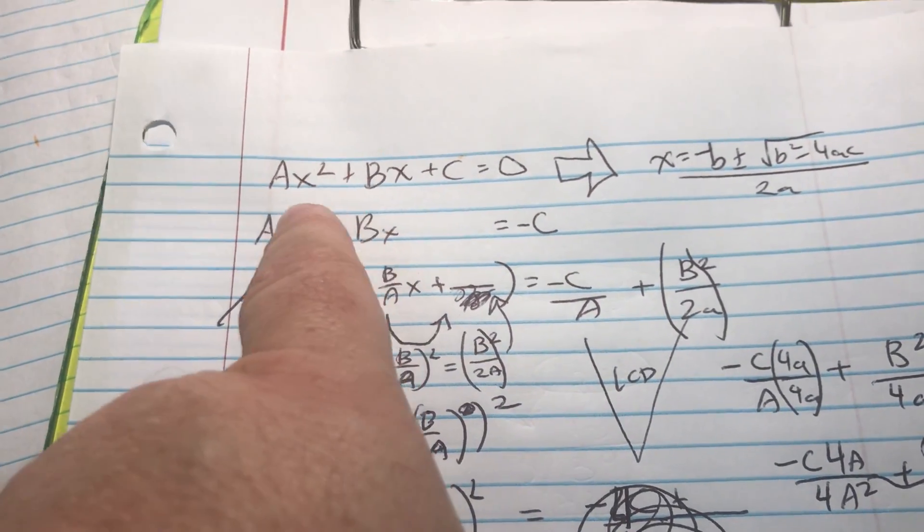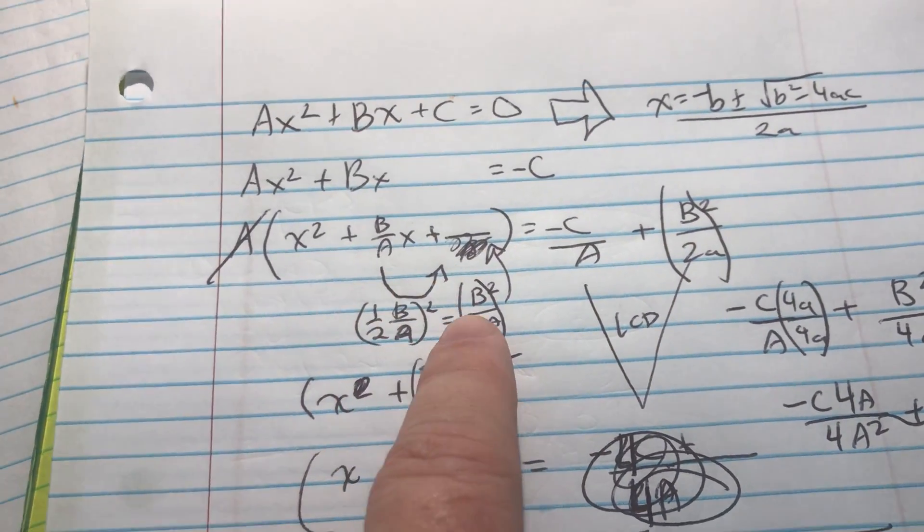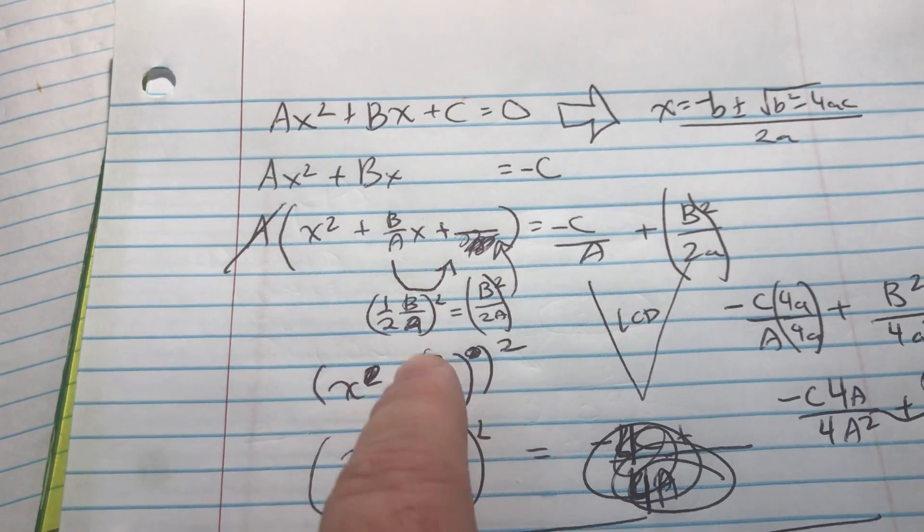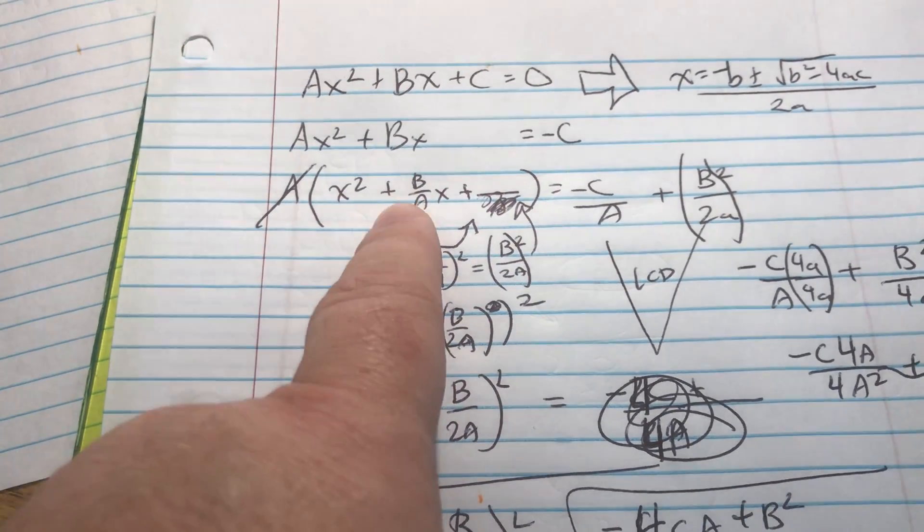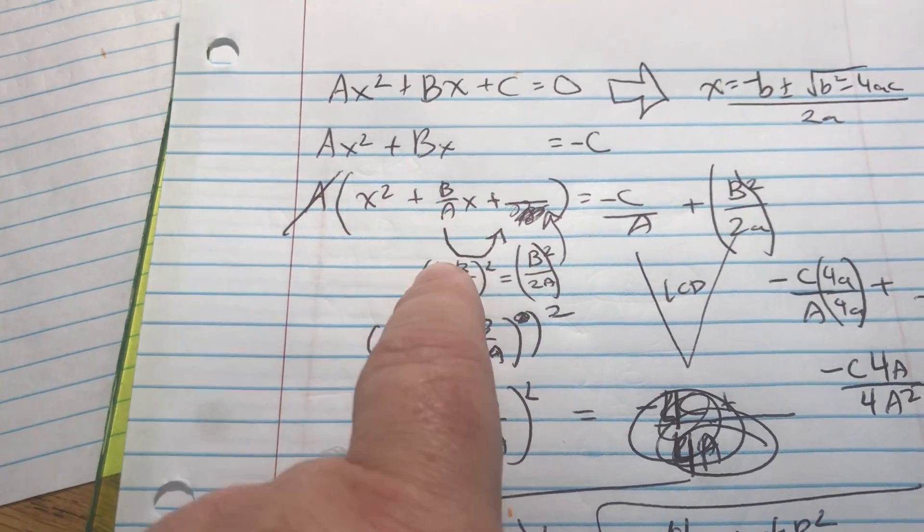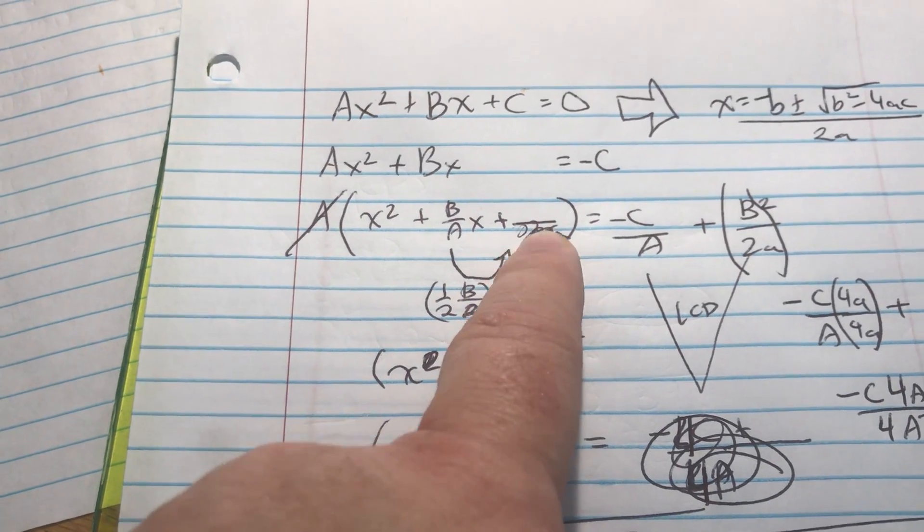I wanted to get the standard form into the quadratic form. I remember completing the square is definitely a key to it. You have to take half of the middle coefficient and then you have to square it at the end.